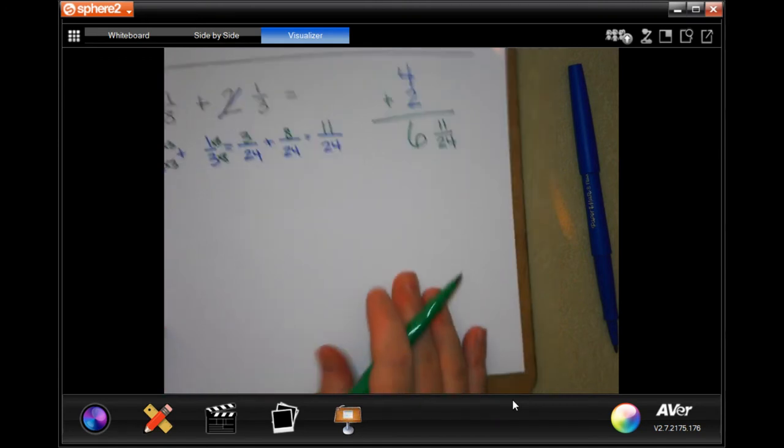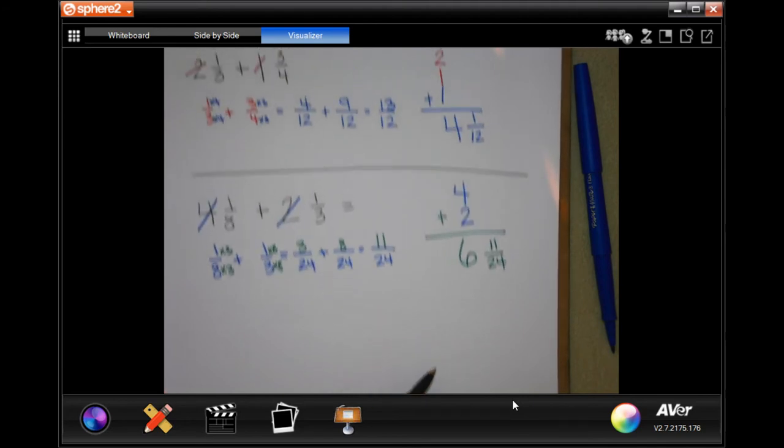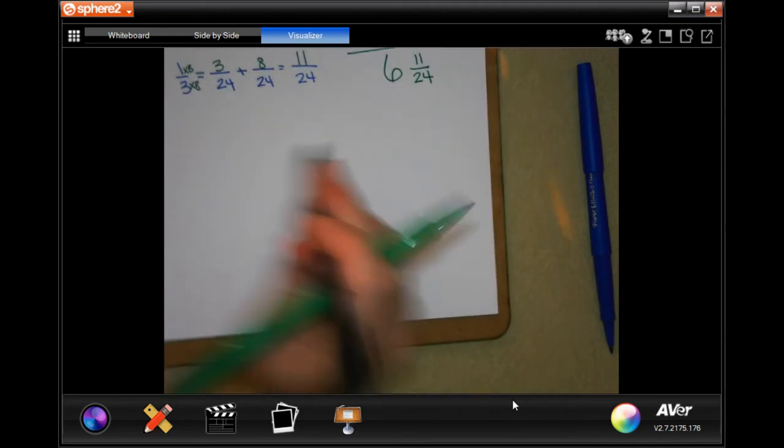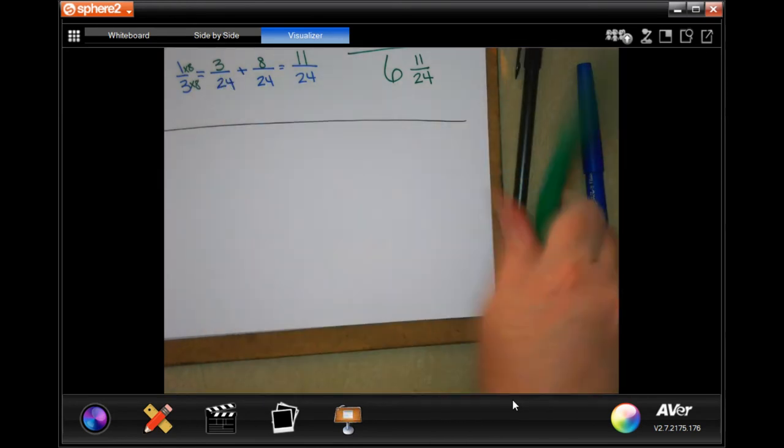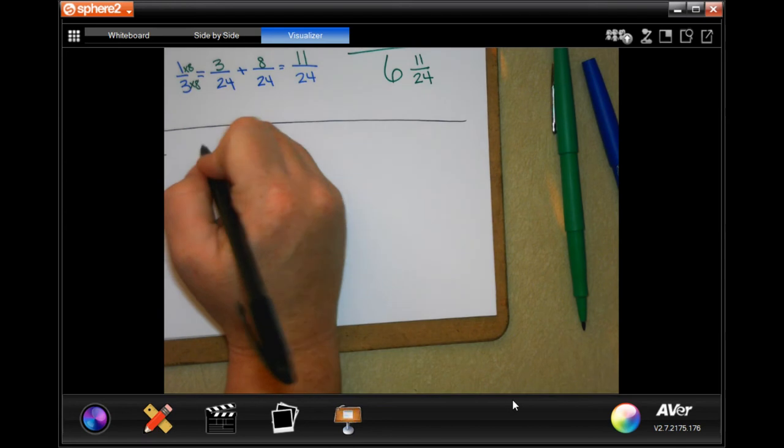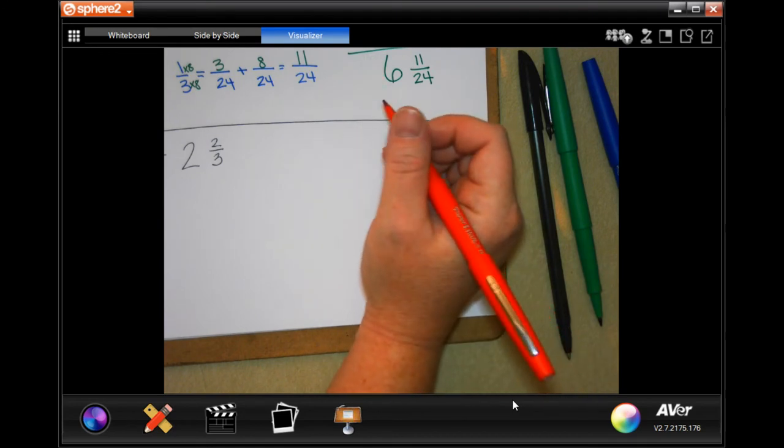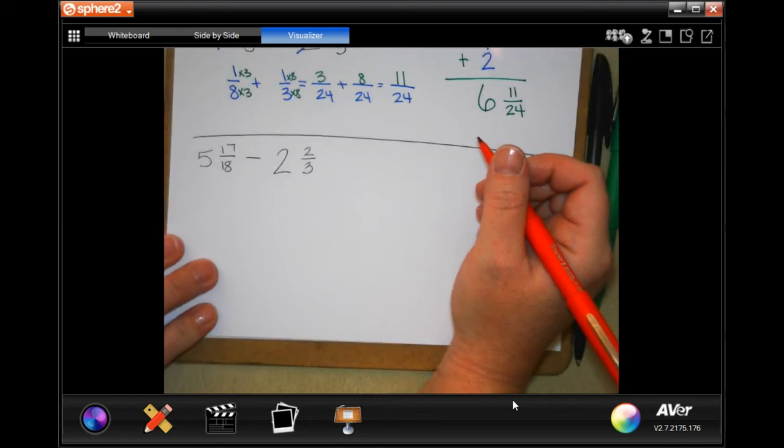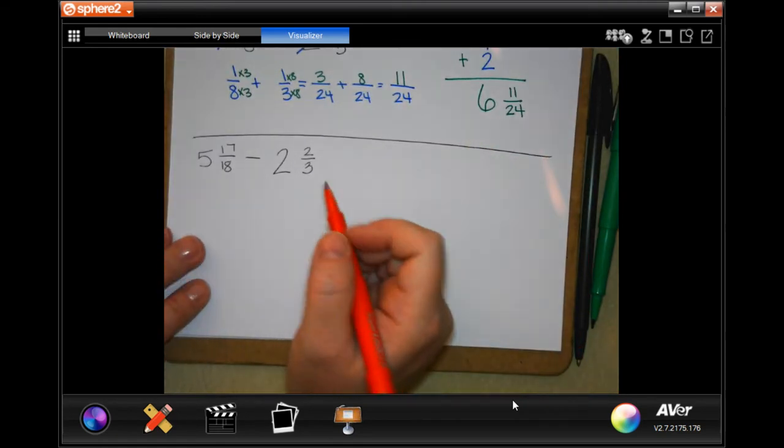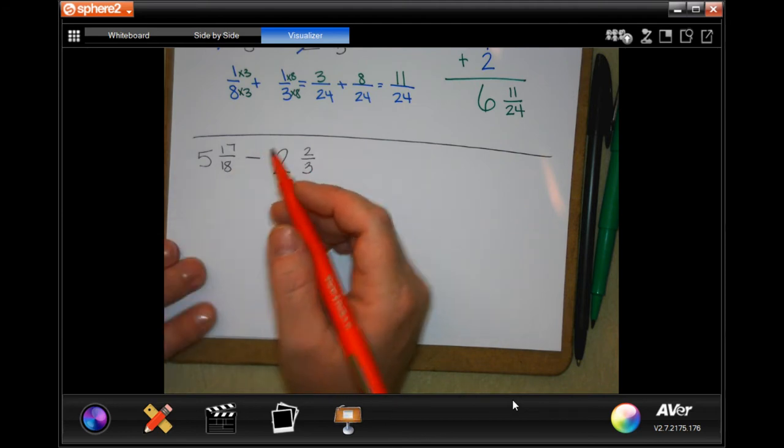Number 6, we are subtracting. Make sure you guys are writing down your work as we go. Pause it, go back, do whatever you need to do to write down your work. So number 6 says 5 and 17 over 18 minus 2 and 2/3. So first, before I do anything else, I'm going to make my denominators match, because I need to know that I have enough over here to take away that without borrowing one, which we'll get to later.